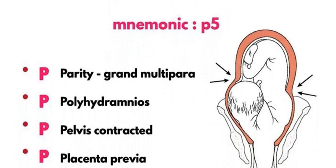The fourth P is placenta previa, or a low-lying placenta. It can also cause the unstable lie of the fetus.